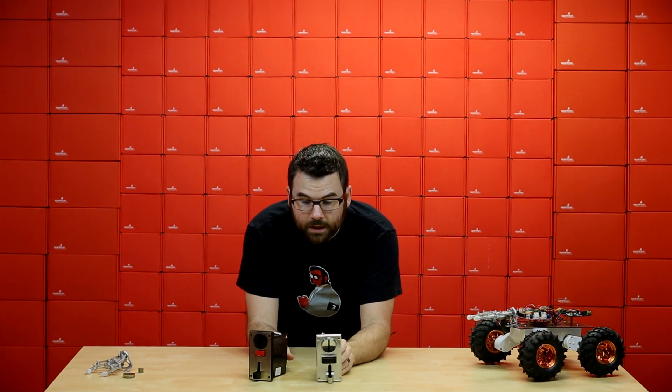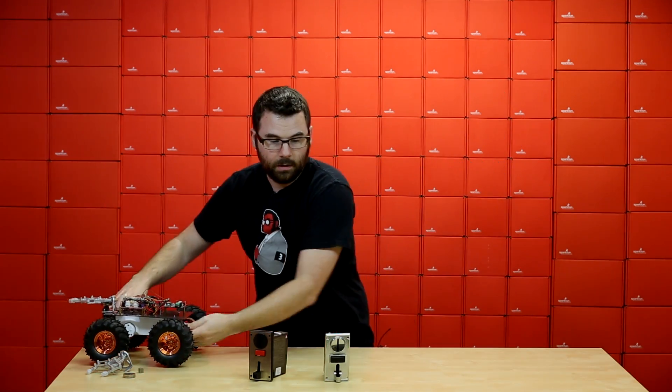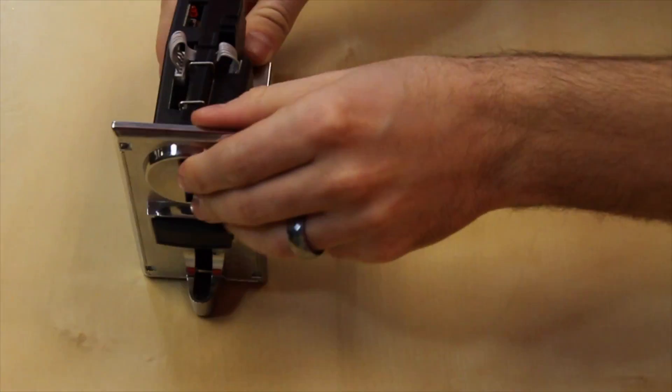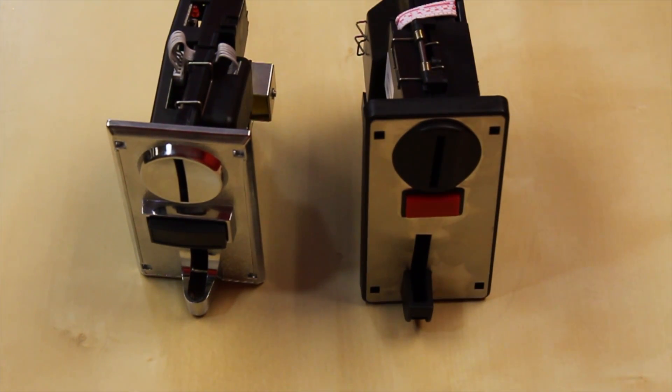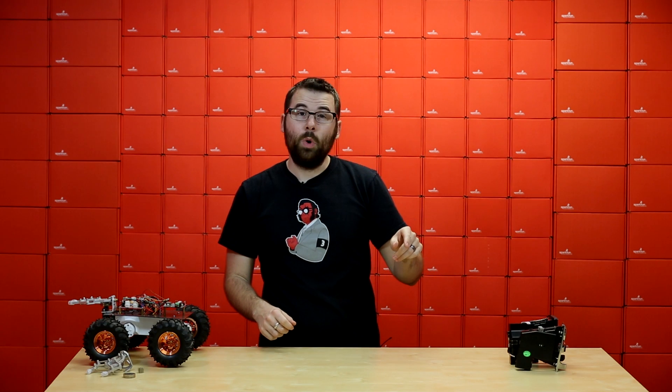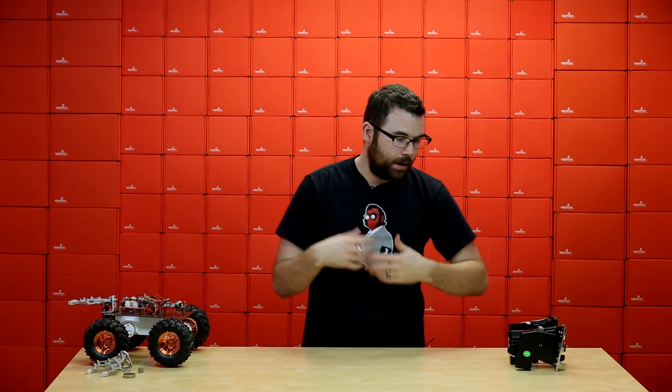So first up we've got these two. These two are coin acceptors. Let me move this over here. So here we've got one and two. These are typically what you'd find in an arcade machine or something like that. You put in a coin, it verifies that you have a quarter, nickel, dime, penny, whatever, and it lets you play your game or do whatever it is you're trying to do.